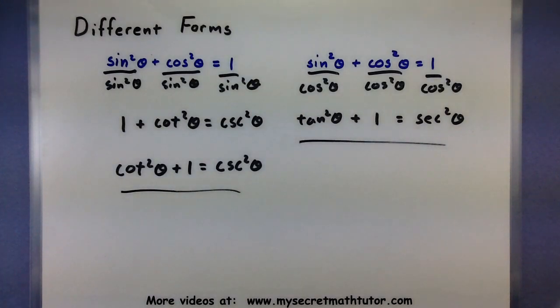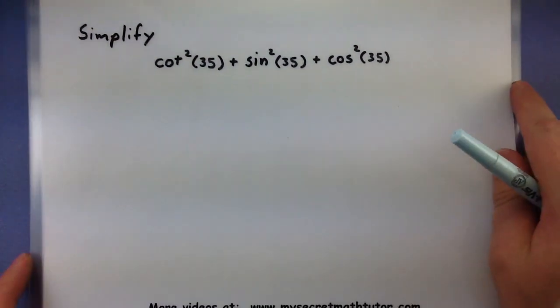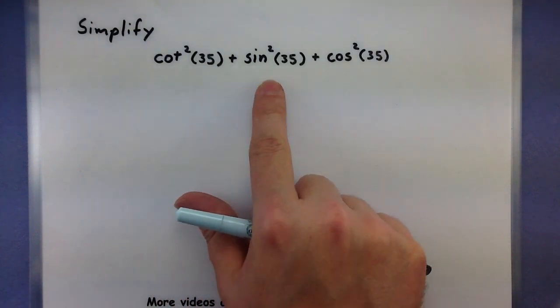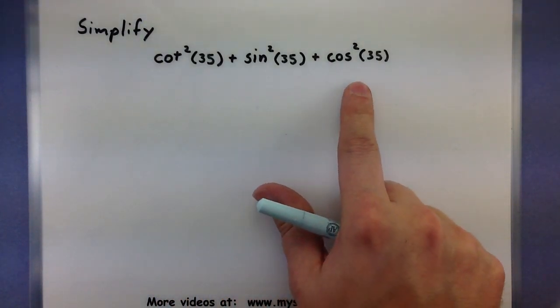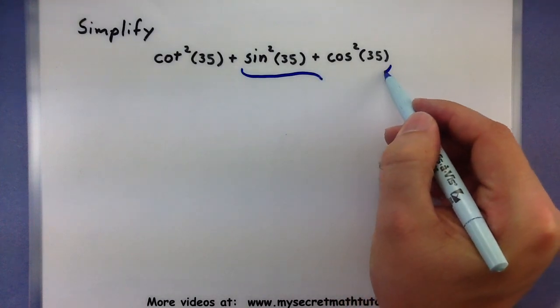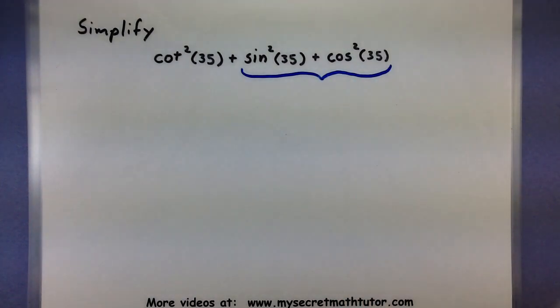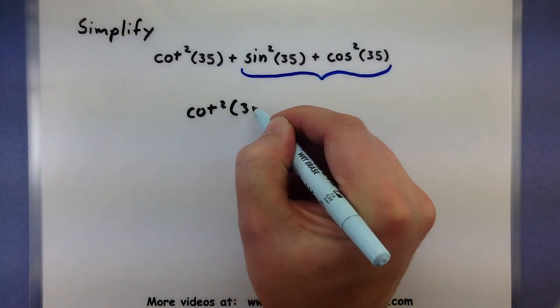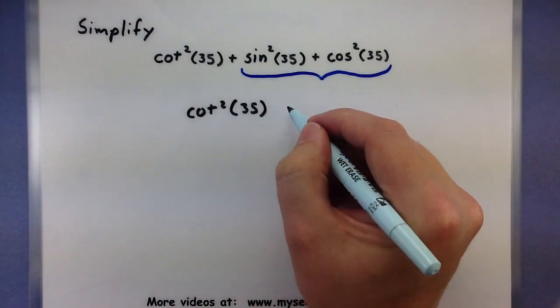So let me show you a few examples of how nice these can be for really simplifying some expressions. Let's go ahead and simplify cot²(35) + sin²(35) + cos²(35). Thinking about all of the different things we could use, maybe one of the most important things to recognize are these two right here. I have sin² of an angle plus the cos² of that same angle. So according to our identity, both of those will combine and they will give me just a 1.